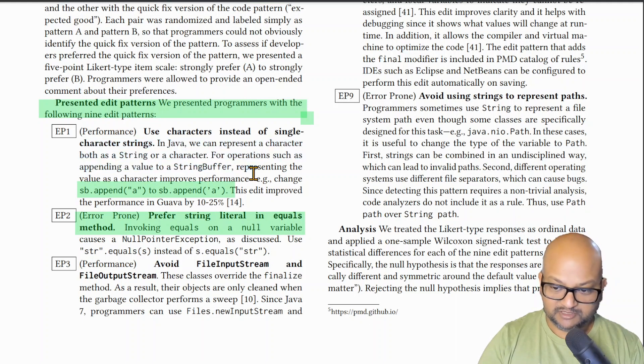The first one is a performance quick fix where if we are trying to use a character, we should prefer the character literal rather than the string literal because the character literal is going to be much faster. Another one is an example we saw at the beginning of the paper, which was to use a string literal when invoking the equals method.